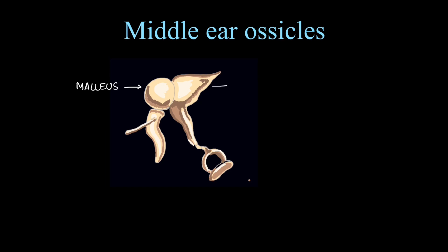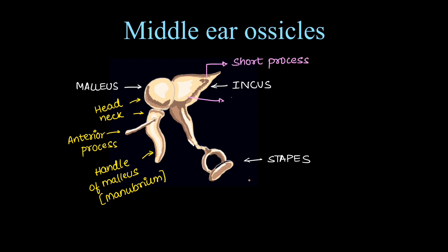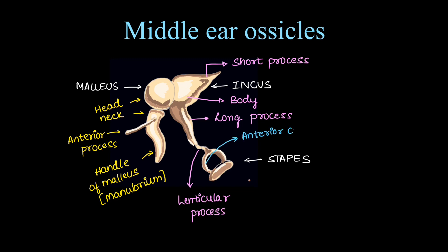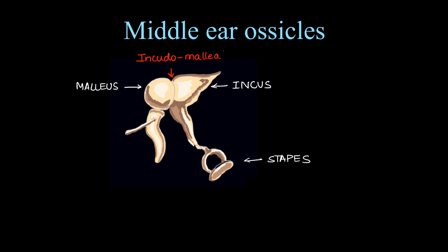We will see labeled illustrations of middle ear ossicles and their parts. Malleus has a rounded head, neck, anterior process, and a long inferior handle also called the manubrium. Incus has a short process, body, long process, and a small lenticular process which attaches to the stapes. Stapes has an anterior crux, posterior crux, and a footplate. Joints between the ossicles are the incudomalleal joint and the incudostapedial joint.